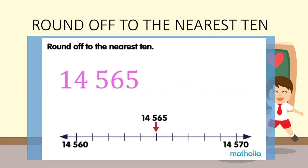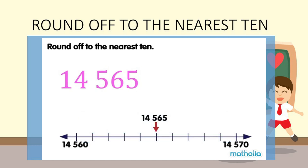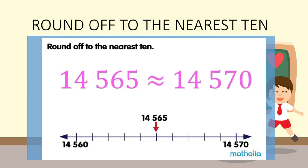Let's round off 14,565 to the nearest 10. The digit in the ones place is 5. Digits that are 5 or more are rounded up. So, 14,565 is rounded up to 14,570. To the nearest 10, 14,565 is approximately equal to 14,570.